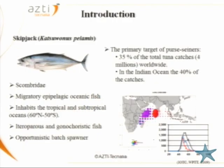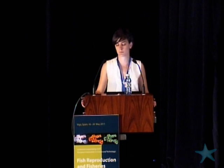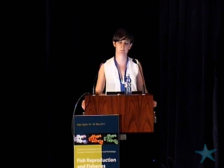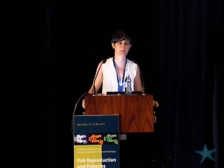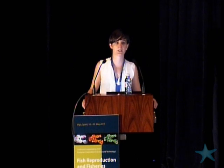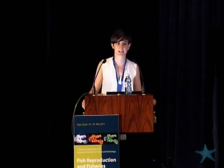The skipjack is a scombreid, widely distributed in the tropical and subtropical waters worldwide. It's a heterosporous and monoclistic fish and previous studies have defined it as an opportunistic batch spawner. The spawning occurs in offshore waters whenever the hydrological conditions are favorable. In terms of the fishery, it's an important species because 35% of the total tuna catches worldwide are of skipjack, and a big part of them are fished in the Western Indian Ocean. This species is not prone to overfishing, but the catches have decreased in the last decades.